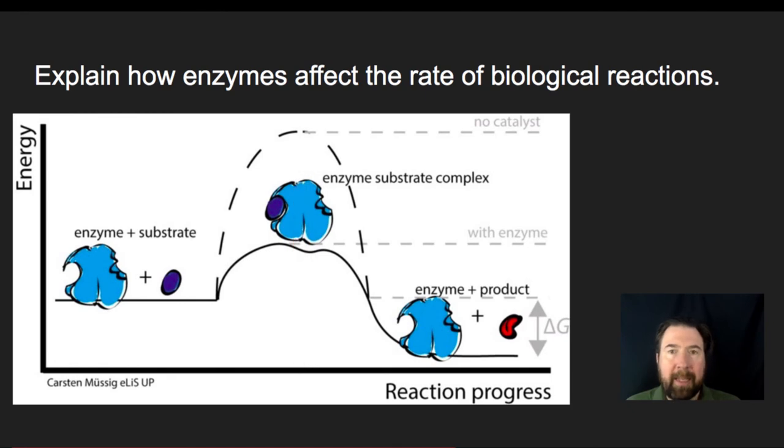The reason it does this, remember we have the active site and it has a particular shape, it has an affinity. What it does is it aligns the substrate molecule into a particular location in a particular environment that enables the rapid reaction to occur.